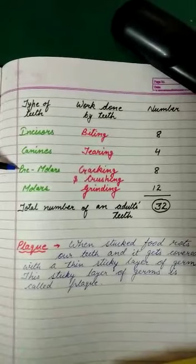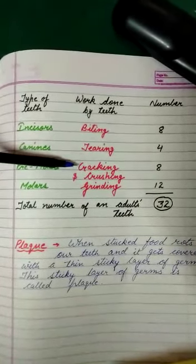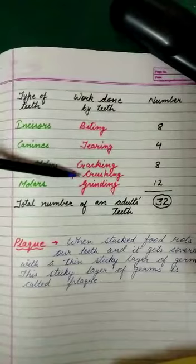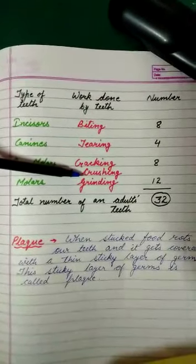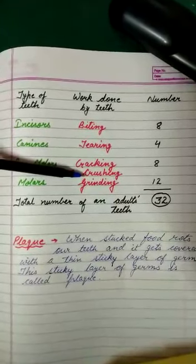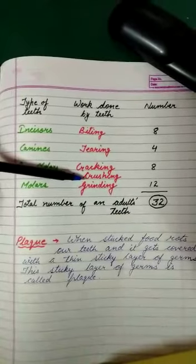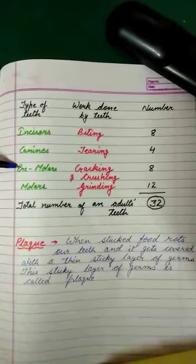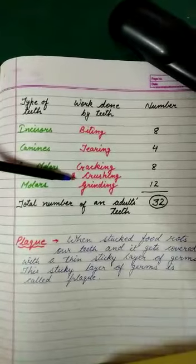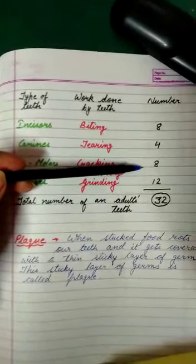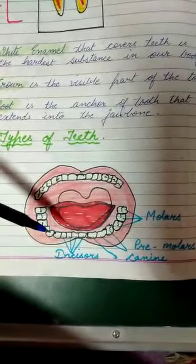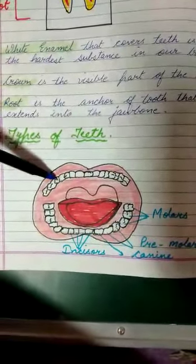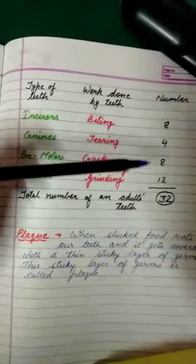Next are the premolars. These are the two teeth after the canines on each side, used for cracking and crushing. For example, if you eat something hard like a nut and want to break it, the premolars do that work. So premolars are used for cracking and crushing, and they are 8 in total — 2 on each of the four sides.